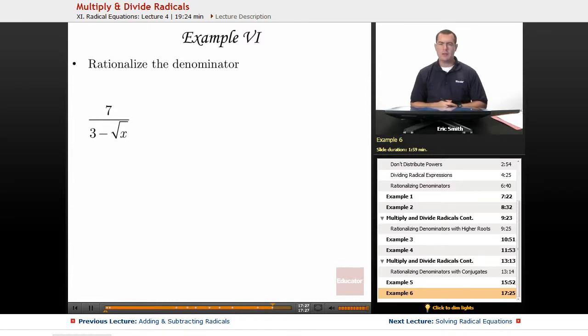Last example, let's look at rationalizing the following denominator. We have 7 divided by 3 minus the square root of x.